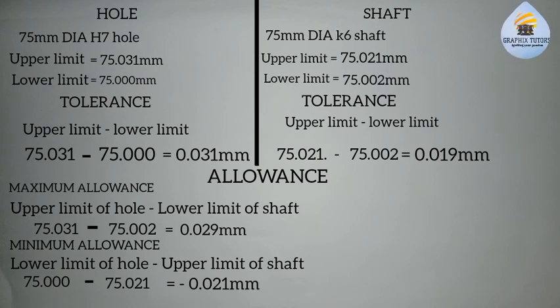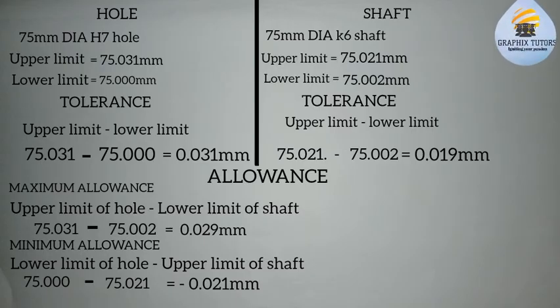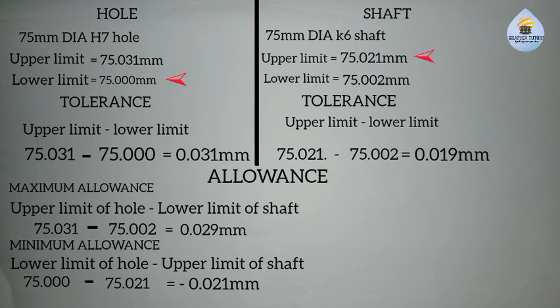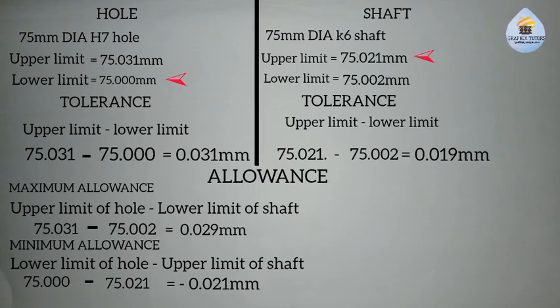The fourth question is the type of fit. We have three types: interference fit, clearance fit, and transition fit. In this case, since the upper limit of the shaft (75.021) is greater than the lower limit of the hole (75.000), this is an interference fit. The shaft is like a rigid rod that cannot enter the hole without force, because it is bigger than the hole.